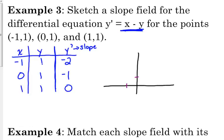At negative 1, 1 the slope is negative 2. You want to make sure that at this point a slope of negative 2 is a little bit steeper than a slope of negative 1. At 0, 1, a slope of negative 1 is a 45-degree slope. See how the line to the left is a little bit steeper. At 1, 1, it has a slope of 0, and a slope of 0 is a horizontal line. Undefined slope is a vertical line.